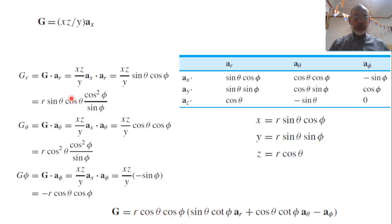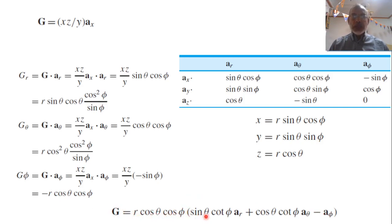Combining all components and factoring out r cosθ cosφ as a common factor, the vector G in spherical coordinates is: G = r cosθ cosφ [sinθ cosφ/sinφ â_r + cosθ cosφ/sinφ â_θ − â_φ]. This completes the conversion of the vector from Cartesian to spherical coordinates.